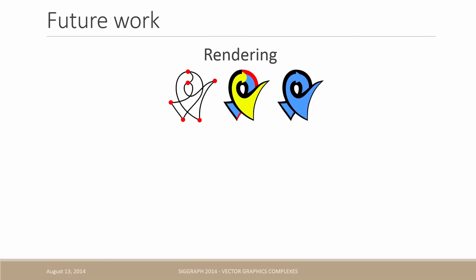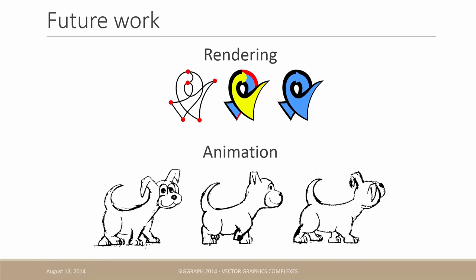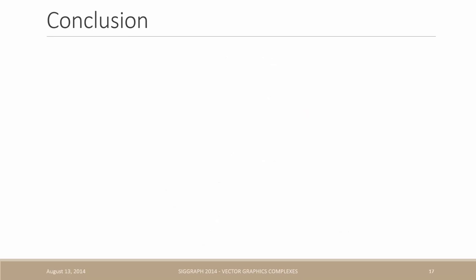Something still to be done is to improve the rendering of vector graphics complexes, since right now our naive approach sometimes lead to various artifacts, and finally extending this structure to represent a 2D animation with topology that changes in time is an exciting future direction.